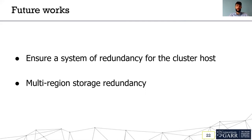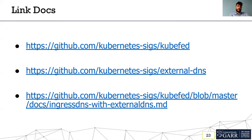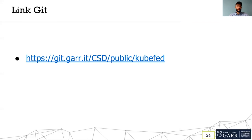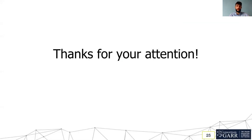Another future work item is multi-region storage redundancy for Kubernetes storage and persistence. For the moment we work only at the application services layer, but we want to try a mechanism to create the same high availability also for the storage layer. There are some links about the KubeFed and external DNS documentation, and a GitLab repository where we have defined and configured files for creating and testing KubeFed. That's all — thanks for your attention, and I'm available to answer your questions.